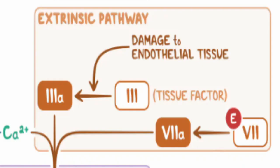The extrinsic pathway begins when damage to the tissue occurs, and as we can see, is much simpler than the other pathways. This tissue damage exposes tissue factor, also known as factor 3, to blood, activating it. Activated factors 3 and 7, alongside a calcium ion, are required to activate factor X, much like how it works in the intrinsic pathway.